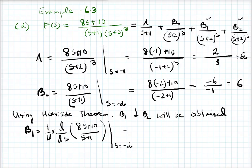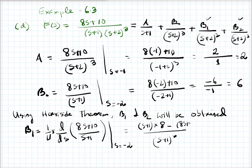Taking the first derivative using the quotient rule: you get (s+1)×8 minus (8s+10)×1, all over (s+1) squared. Simplifying the numerator: 8s+8 minus 8s minus 10 = -2. So the derivative is -2 over (s+1) squared, evaluated at s = -2.